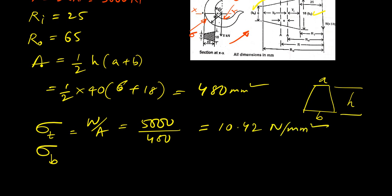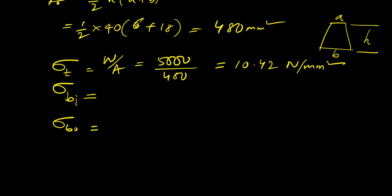Now, for bending stress — maximum bending stress. For this hook, it has one inner surface and another outer surface, meaning we will have two bending stresses: one will be internal (sigma_bi) and another will be outer (sigma_bo).